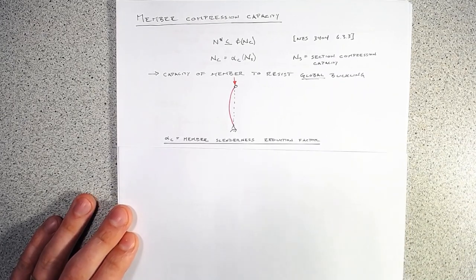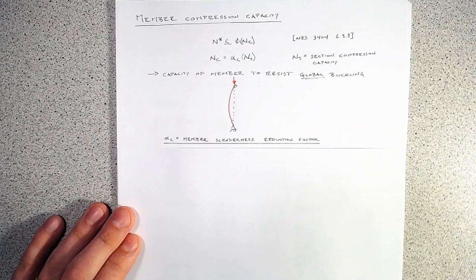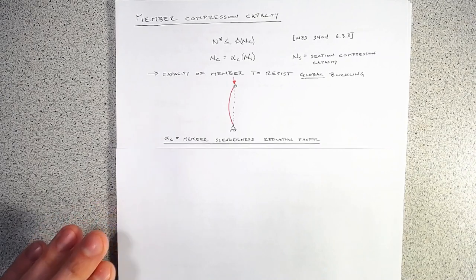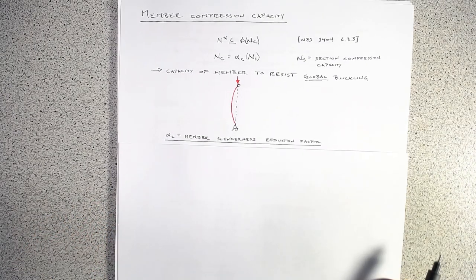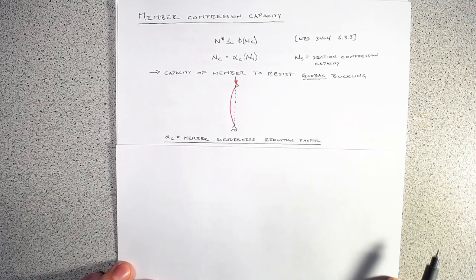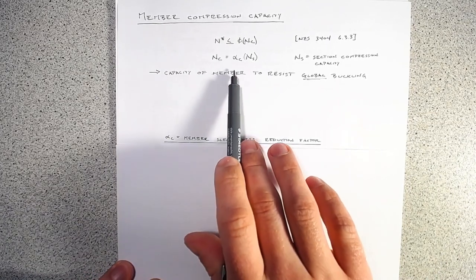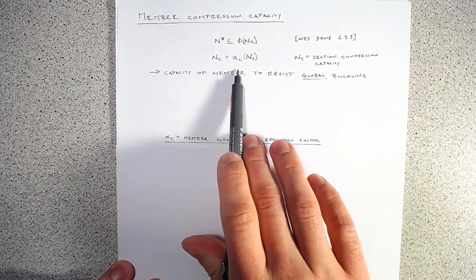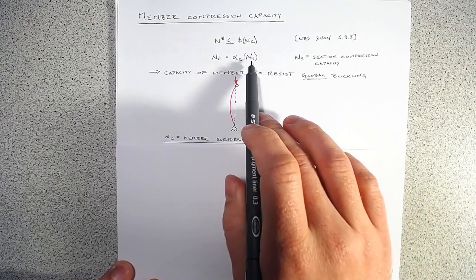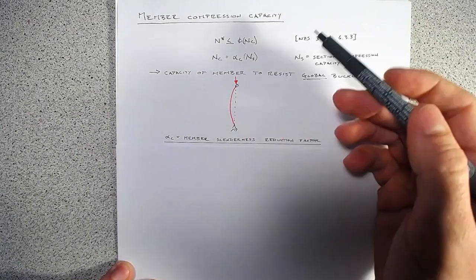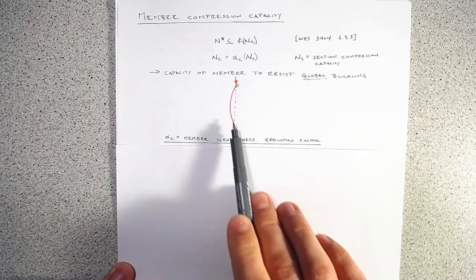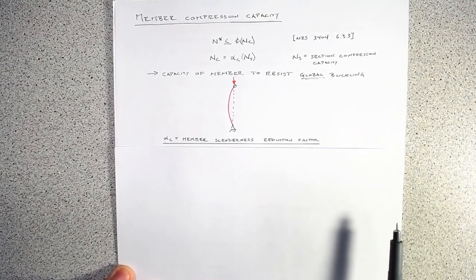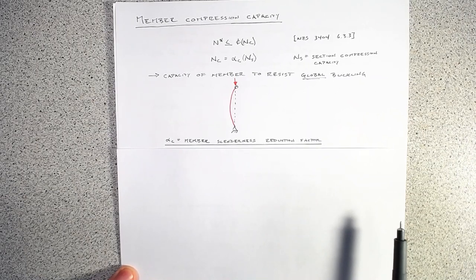This alpha_c is what we refer to as our member slenderness reduction factor. It is essentially a modifier applied to our section capacity that reduces it based upon our ability to resist buckling.